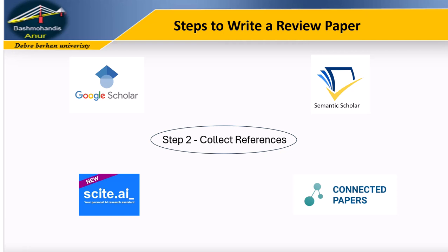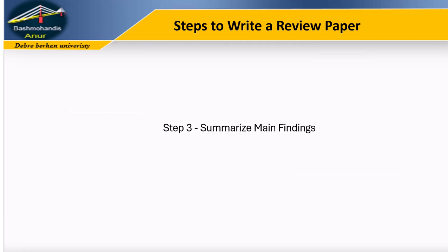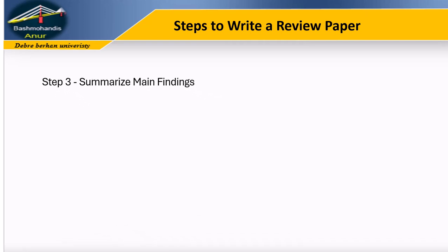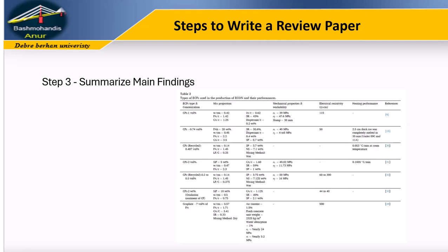Scite, Semantic Scholar, and Connected Papers are AI tools that can help you see how papers are interconnected and find the most influential studies in your field. Step 3: Summarize main findings. Carefully review and analyze all the data and results from the existing research. This critical examination will help you identify the most significant findings and ensure you don't miss any important information. Use a table to summarize the main findings, especially numerical values. Remember, Rome wasn't built in a day, so make progress gradually in collecting the main information in a table.